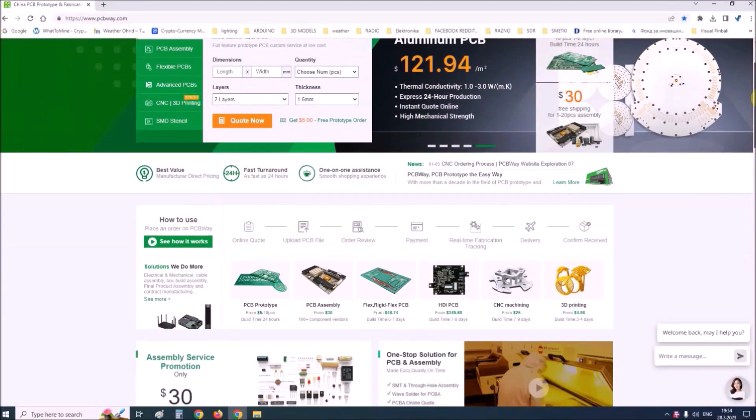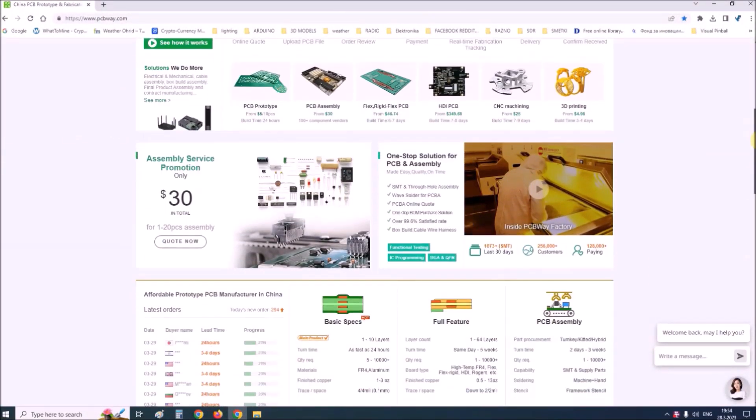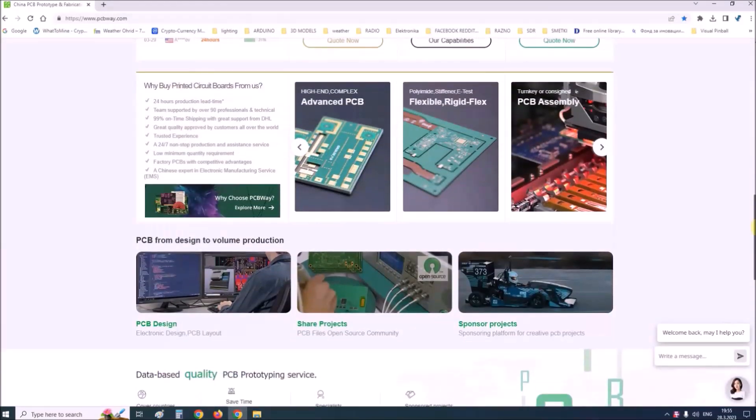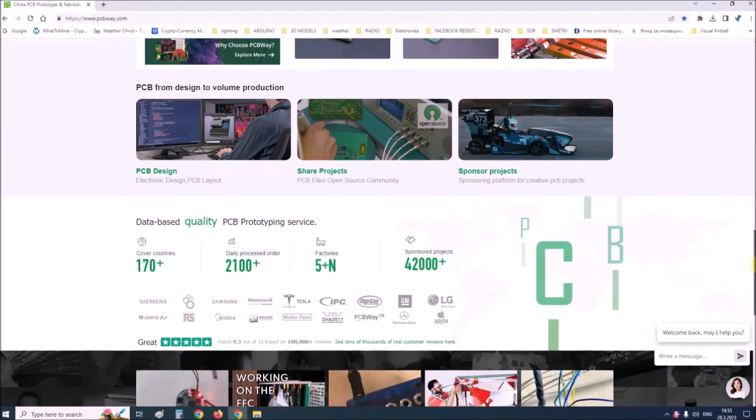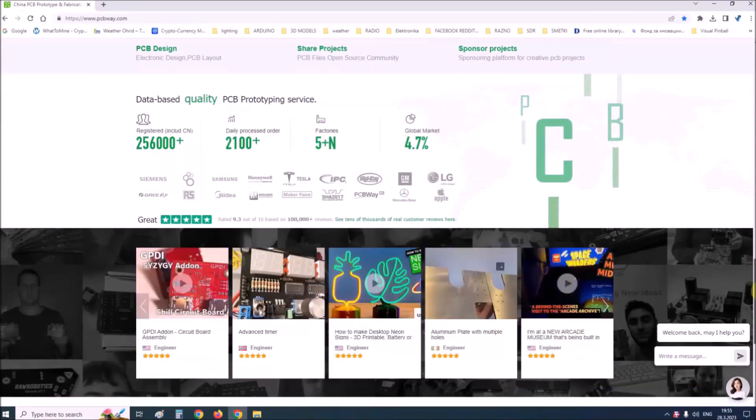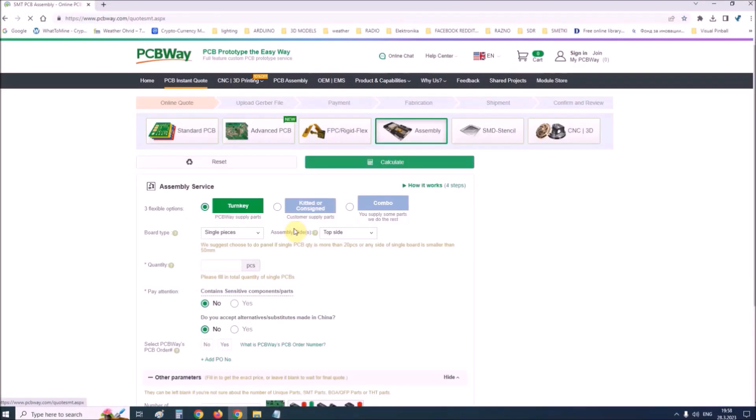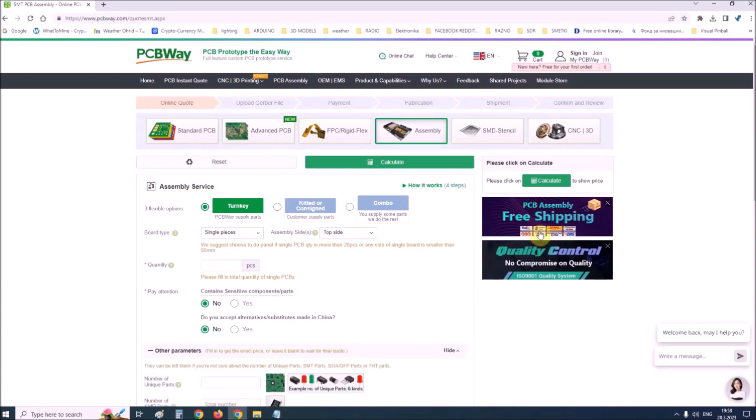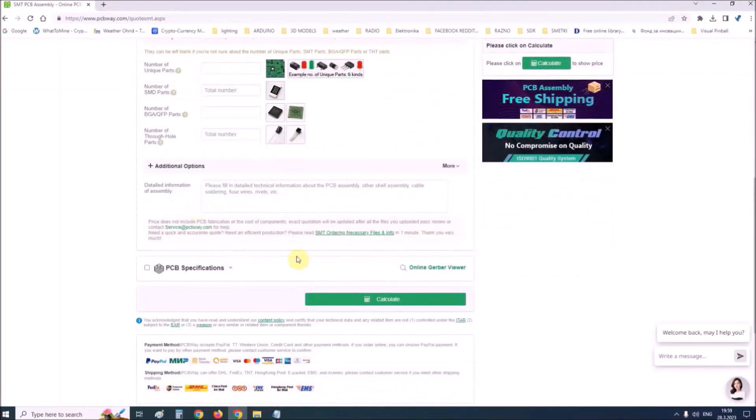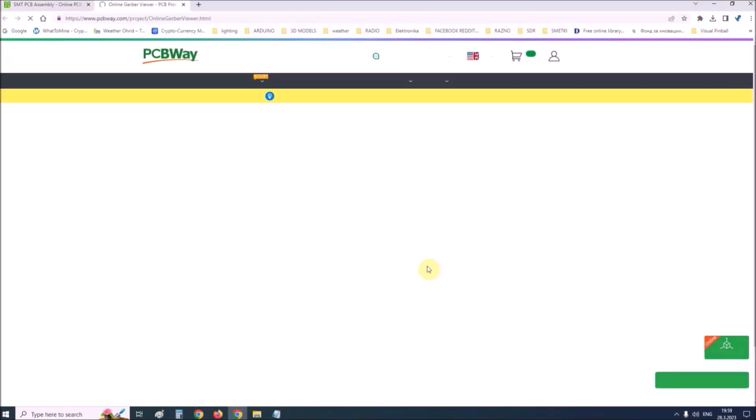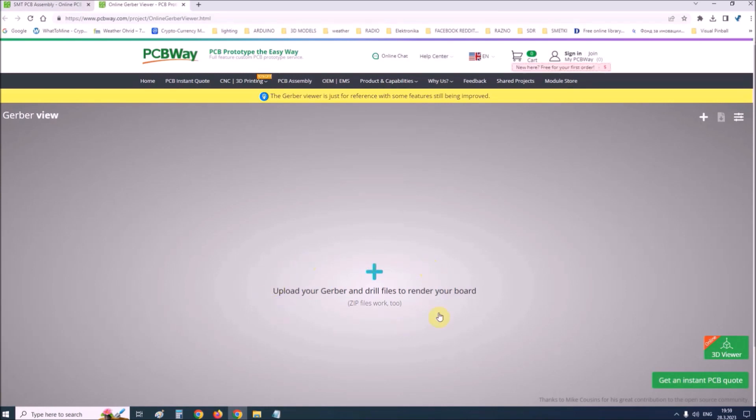This project is sponsored by PCBWay. PCBWay is one of the most experienced PCB manufacturing companies in China in field of PCB prototype and fabrication. They provide complete PCB assembly service with worldwide free shipping and ISO 9001 quality control system. Also, on their site there is an online Gerber viewer where you can upload your Gerber and drill files to render your board.